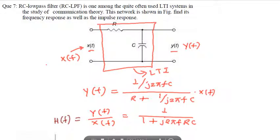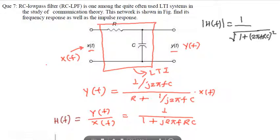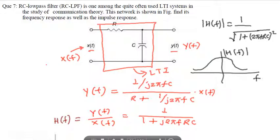The magnitude of H(f), that is |H(f)|, equals 1 over the square root of (1 + (2πfRC)²). The graph of |H(f)| versus the frequency axis f represents the frequency response of the LTI system.